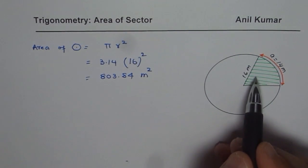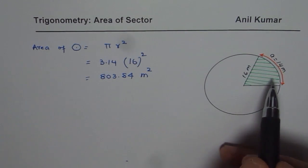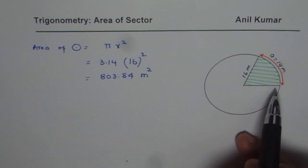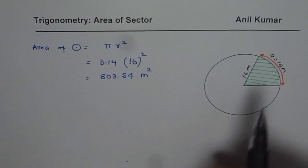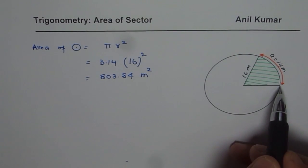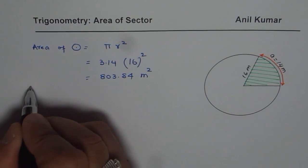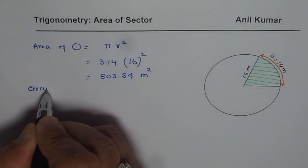Now area of the sector is a ratio of the circumference. We know full circumference we can find knowing the radius to the given arc length. So that is a good method to use here. So let us find circumference.